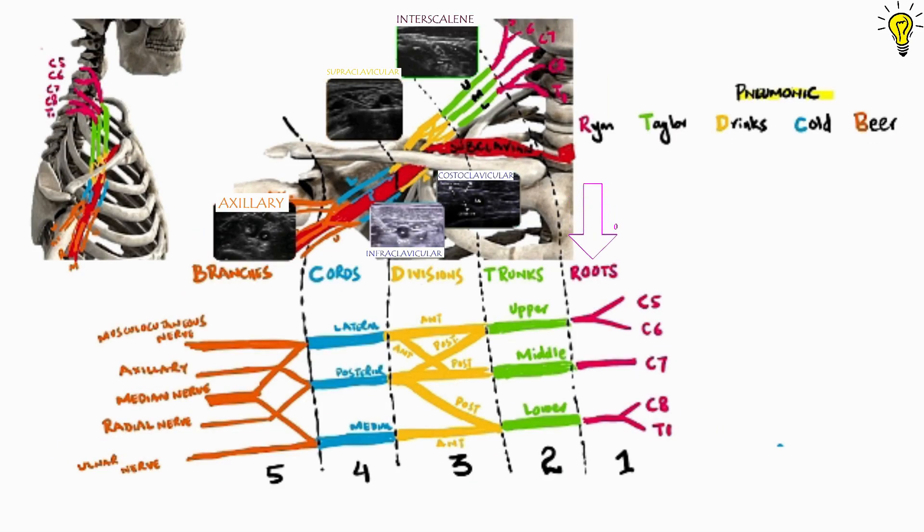So overall we have five roots, then three trunks placed vertically, upper, middle and lower. And each trunk having two divisions, the anterior and posterior divisions. And then there are three cords lying in relation to axillary artery. And then in the end we have branches.